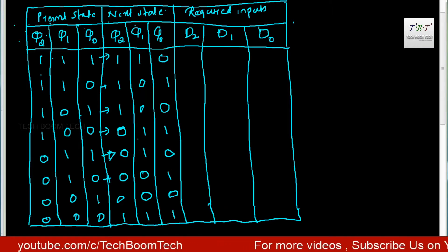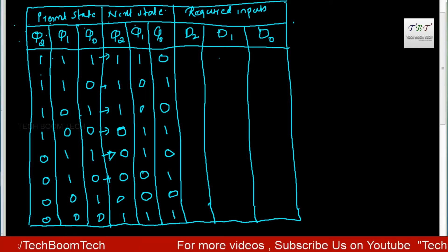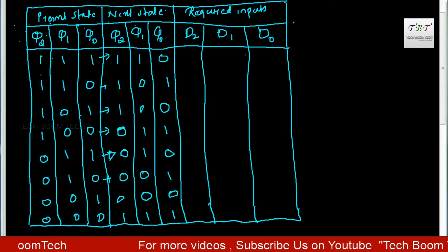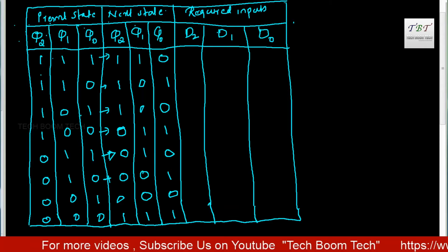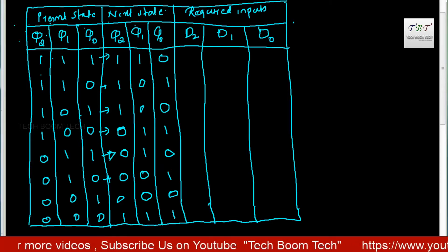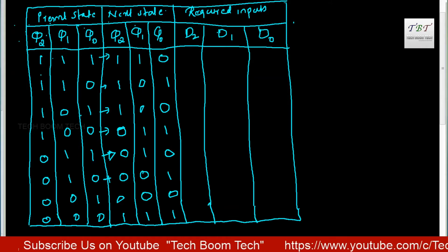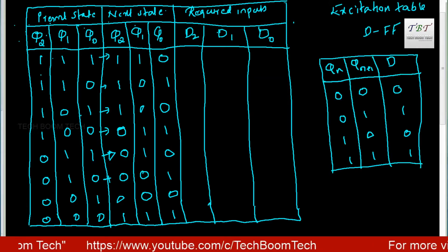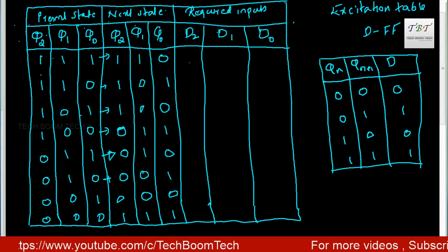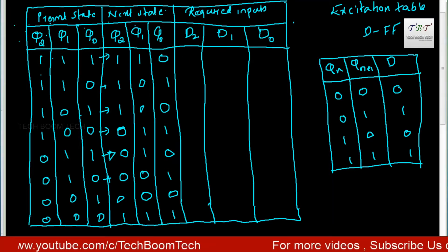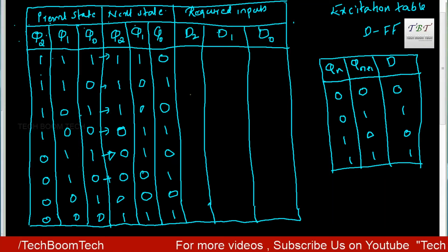That's the present state and next state. Now we need to find the required inputs. We are processing the required inputs using the D flip-flop excitation table. For the excitation table, add D2, D1, D0 values and find the D2 value.